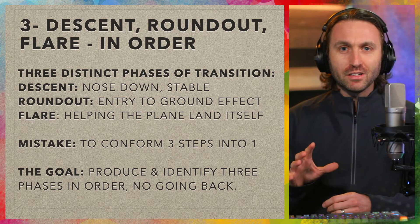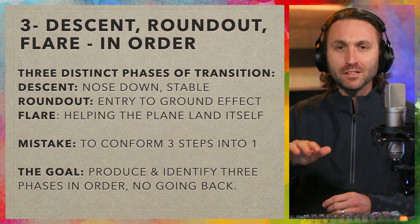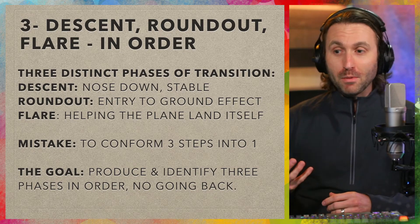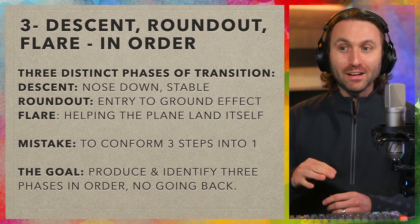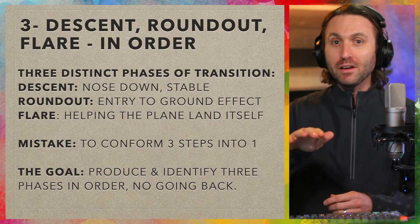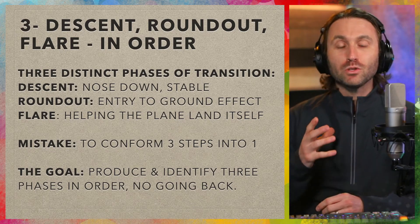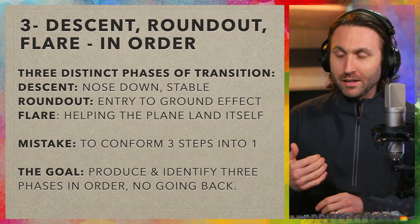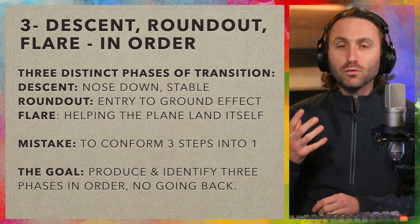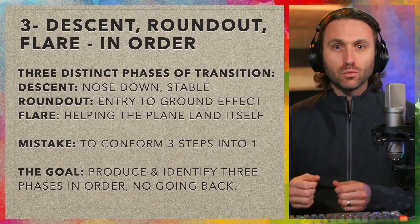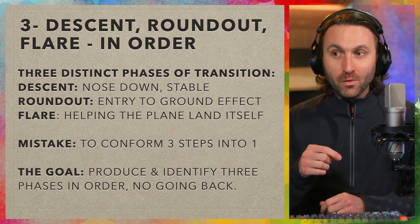The mistake I've seen way too often is to combine all three phases into just one, making them sloppy and undefined. The goal is to produce three distinct phases in order — descent, roundout, flare — with no going back. You can't go from descent to roundout to another descent and then flare. It has to go descent, roundout, and flare in that order. What's best is when a student can verbally identify what they're doing: 'I'm descending, here's the roundout, here's the flare, I'm holding it, touchdown.' That's when you know they understand these three steps.